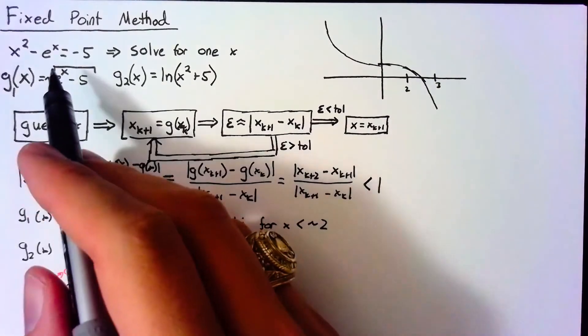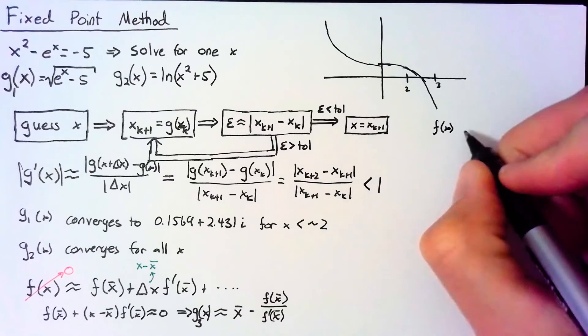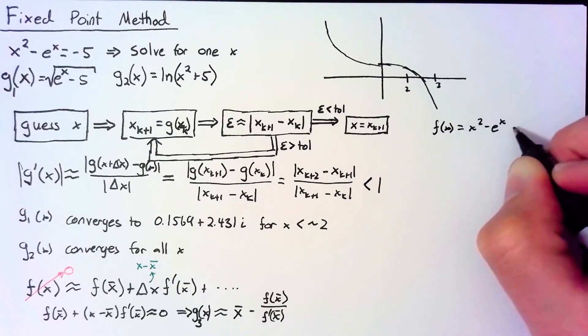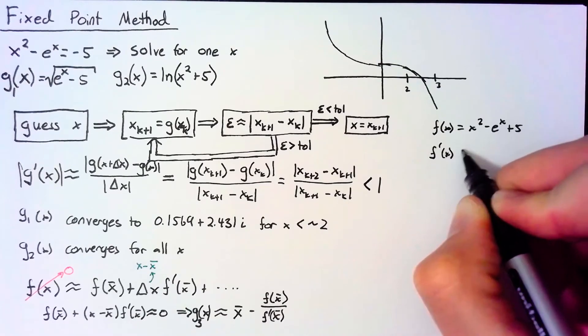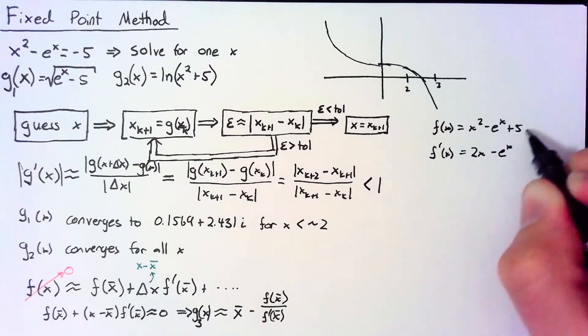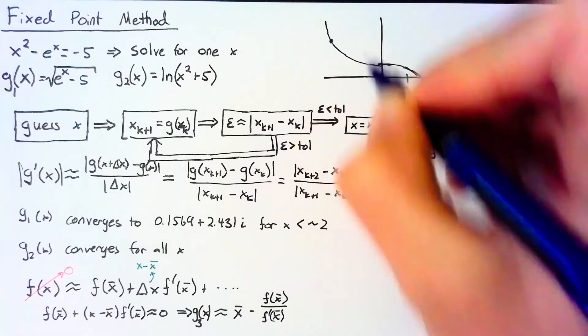So for our equation, we said that f(x) = x² - e^x + 5. Taking the derivative of that, we end up with 2x - e^x, and then the 5 goes away. All right, before we go any further, let's take a look at what this is actually doing.